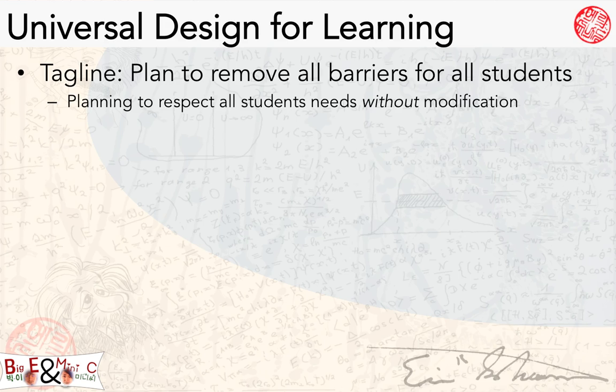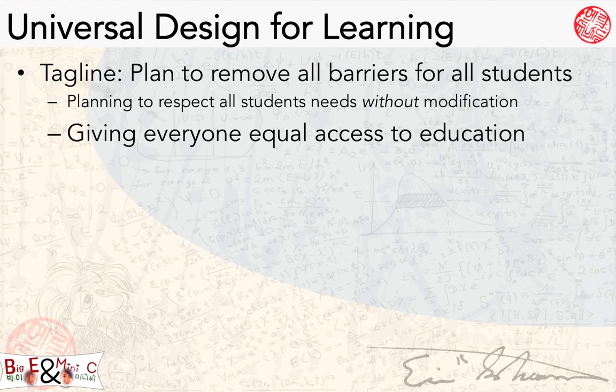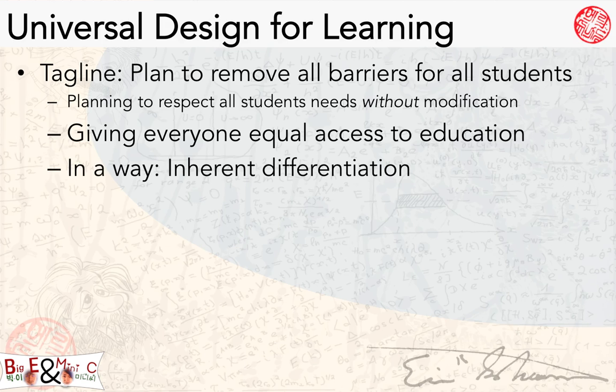One of the main ideas behind Universal Design for Learning is that you can respect the needs of all students by removing barriers to education beforehand, which often results in reducing the amount of individual modification necessary. Now all three frameworks work together very nicely. If somebody needs individual modification, differentiated instruction works well, and we do want to plan backwards with the goal in mind. But UDL is about giving everyone equal access to education — it's like inherent differentiation built into the lesson plan.